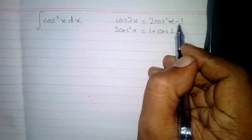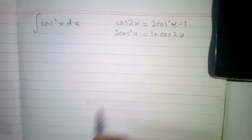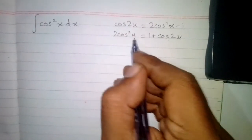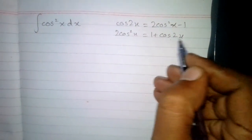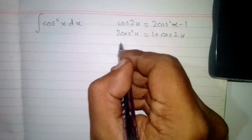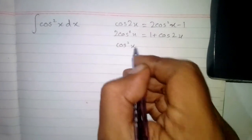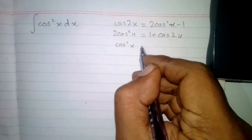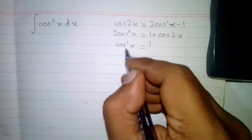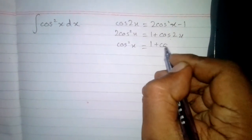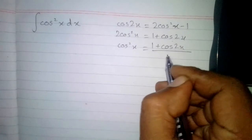Bringing the minus 1 to the other side gives us 2 cos square x is equal to 1 plus cos 2x. Now we take the 2 to the other side of the equation, so cos square x is equal to 1 plus cos 2x upon 2.